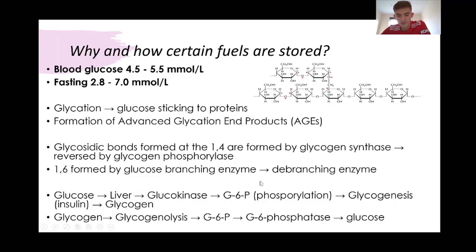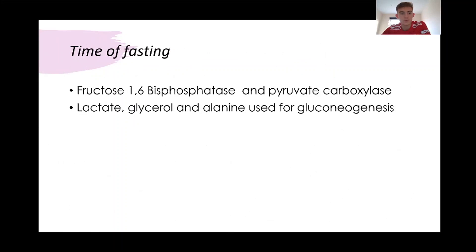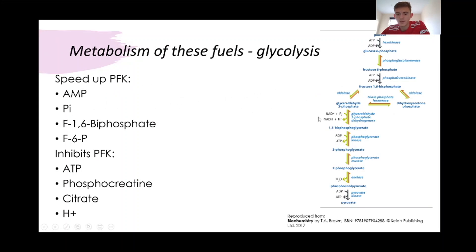If we're fasting, we can use fructose 1,6-bisphosphate, pyruvate carboxylase, as well as lactate, glycerol, and alanine — these amino acids — for gluconeogenesis. So if we have low glucose levels, we can make our own glucose from these organic molecules. Looking at this diagram from a biochemistry textbook: we start with glucose, and we can have either hexokinase or glucokinase turn glucose into glucose 6-phosphate. Then another enzyme makes fructose 6-phosphate — this is the process of glycolysis.